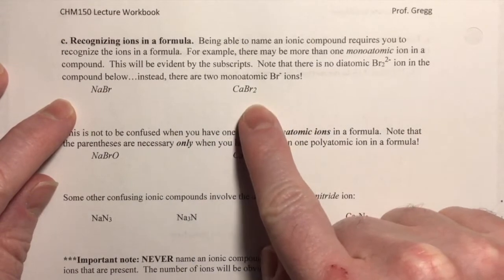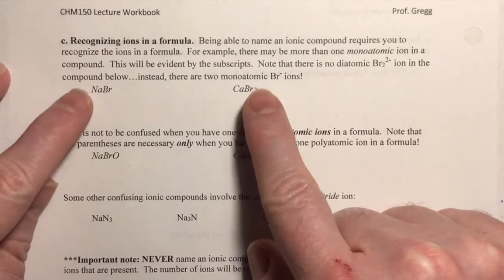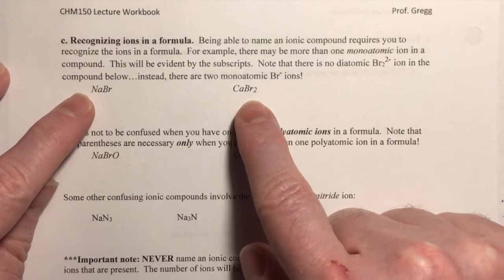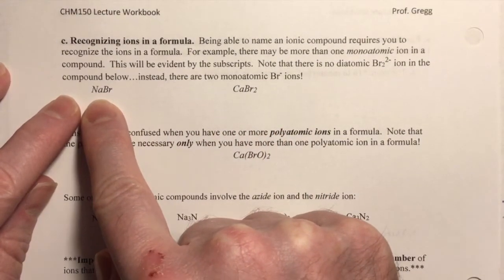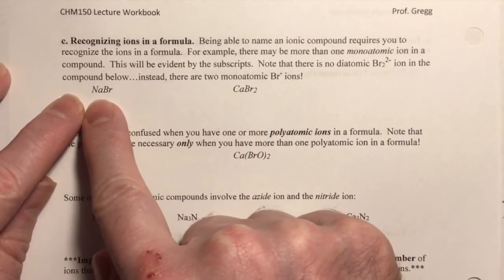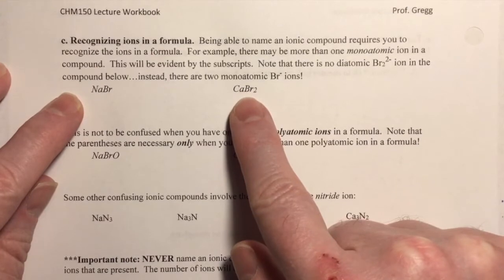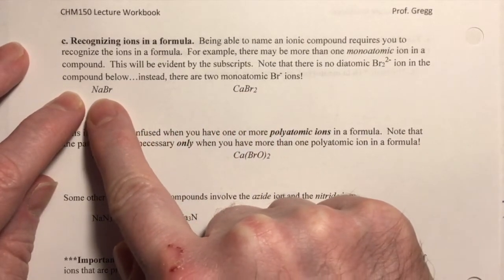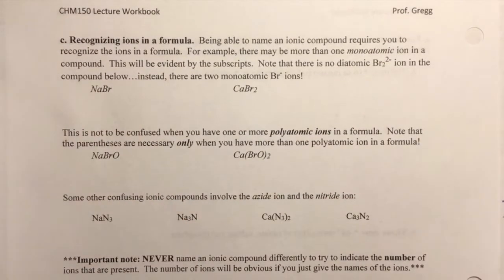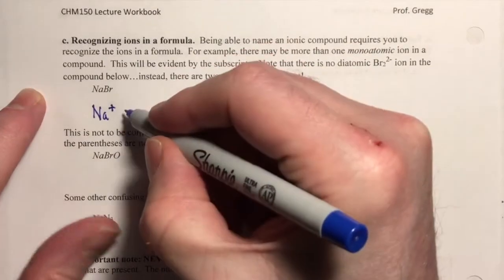In this case right here, we can tell that we have more than one monoatomic ion because of the subscript. How do we know that these two compounds are ionic? Well, the way that we recognize an ionic compound is that it either has a metal or ammonium, NH4, in the first position. So if you see a sodium, that's a metal — this is therefore an ionic compound. Calcium, that's a metal, therefore this is an ionic compound. When we look at this ionic compound, even though the charges are not explicitly drawn, we are seeing a sodium cation and a bromide ion.